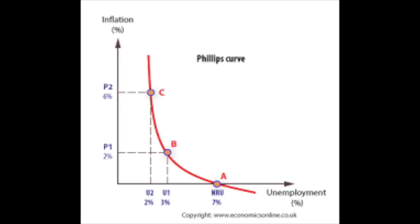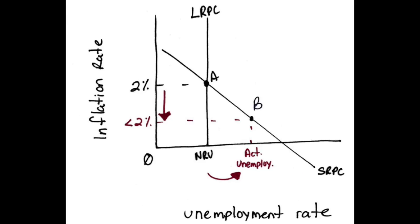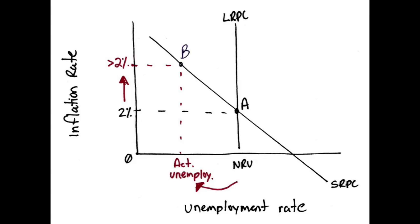The other type of graph where you can find NRU and unemployment is the Phillips curve. The point where the LRPC meets the horizontal axis is labeled NRU, and the horizontal axis on the Phillips curve is labeled the unemployment rate. Anything to the right of the LRPC has an actual unemployment rate above the NRU; anything to the left has an unemployment rate below the NRU. In the SR Phillips curve cost-push inflation graph, actual unemployment is greater than NRU. In the SR Phillips curve demand-pull inflation graph, actual unemployment is below NRU.